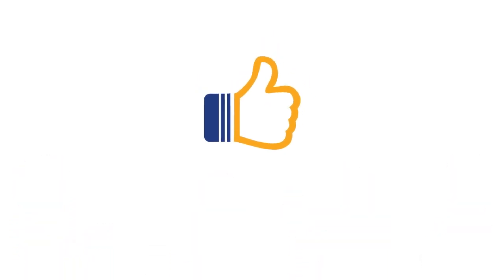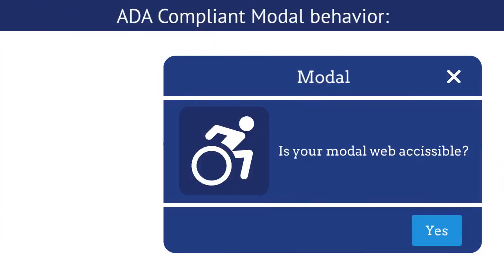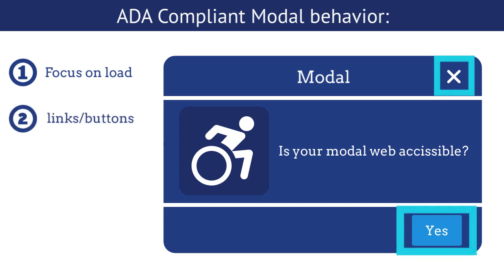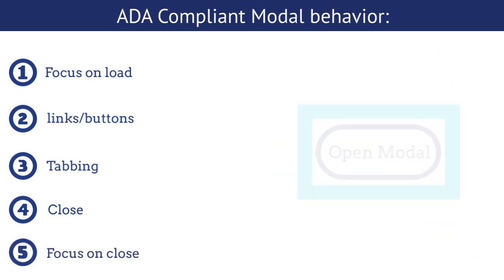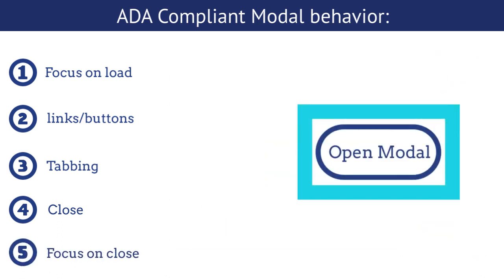Let's see how a web-accessible modal should behave. First, when a modal is loaded the focus should go to the first actionable element within the modal and a screen reader should read the modal header. Second, all links and buttons within the modal should be tabbable. Third, tabbing should stay within the modal. Fourth, a user should be able to close the modal using the Escape key or by clicking or pressing Enter on the close button. Fifth, focus should go back to the button which triggered the modal.